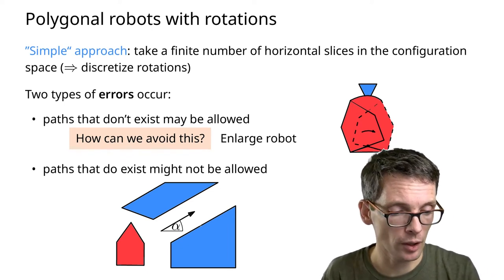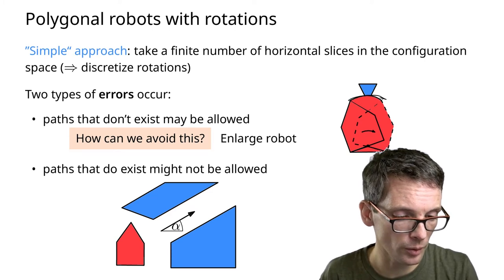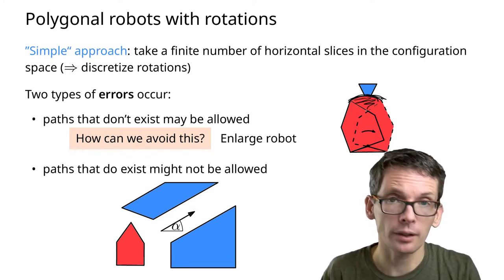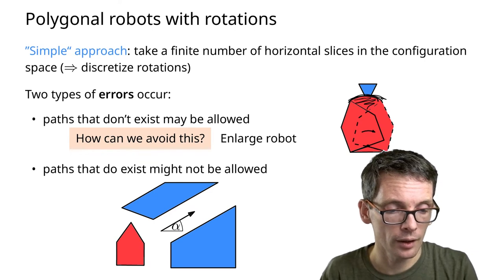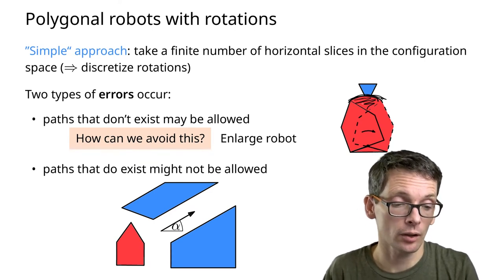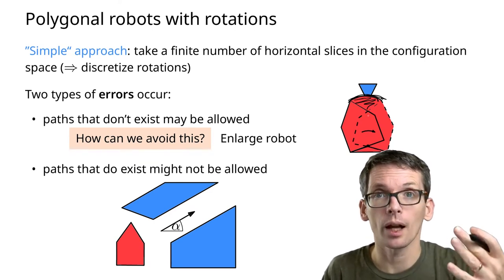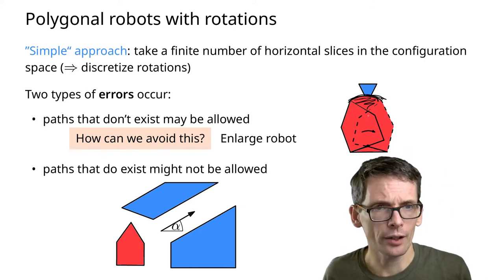We can do that by slightly enlarging the robot to make sure that if I'm connecting those slices that then the robot actually fits. If I slightly enlarge the robots in a way that this part is included, then I would find out that there is an obstacle.